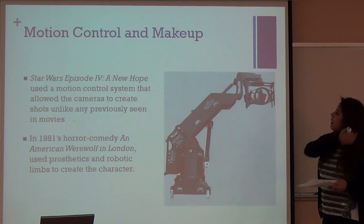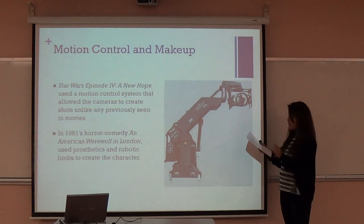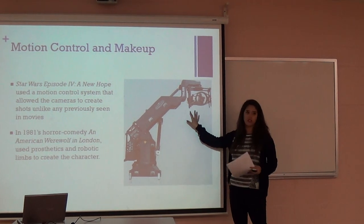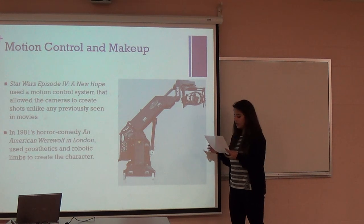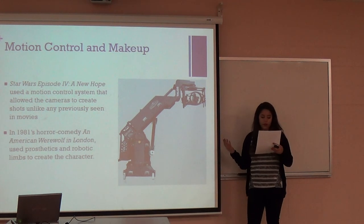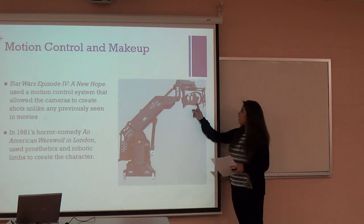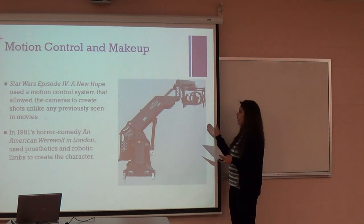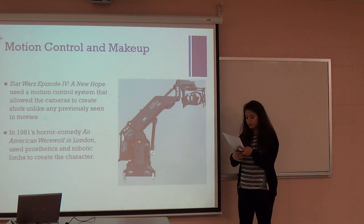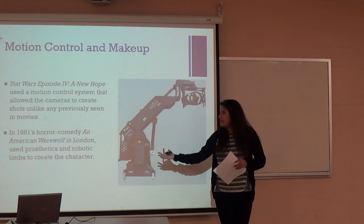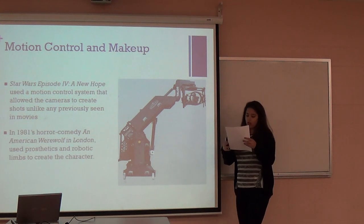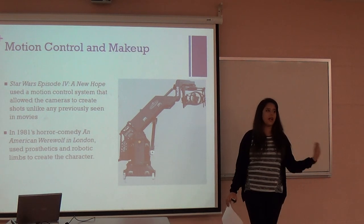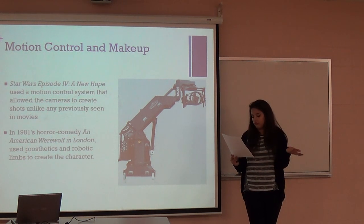Next is motion control and makeup. Star Wars Episode IV: A New Hope was one of the first films to use a motion control system, which makes it easier to get different angles — for example, showing how a spaceship moves. The camera is mounted and the rig moves in a 360-degree angle. For makeup, the 1981 horror comedy An American Werewolf in London opted to use prosthetics and robotic animatronics instead of other types of animation or having the actor hide.